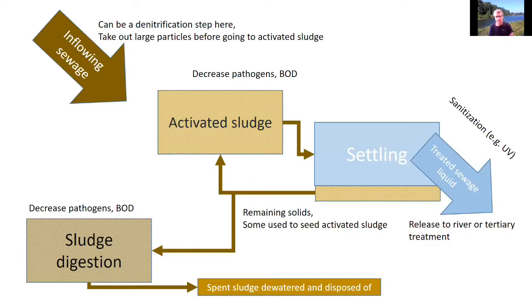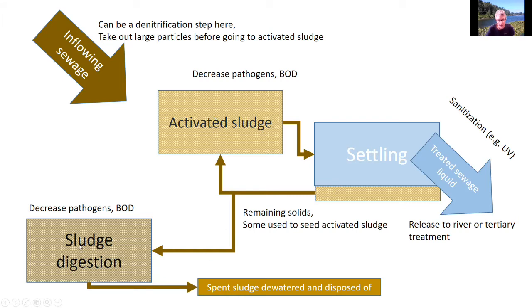Here's a crude diagram of the process. Inflowing sewage can go through a denitrifying and nitrifying step, then large particles are removed before going to activated sludge. In the activated sludge, the microbial community decreases pathogens and BOD. From there it goes to settling. The liquid goes off after being cleaned and is sometimes sanitized with ultraviolet lights — chlorine was used before, but as mentioned, that can create toxic organochlorine compounds. The effluent can then go to tertiary treatment or directly to the river. Settled solids are partly seeded back into the activated sludge and the rest goes to sludge digestion.